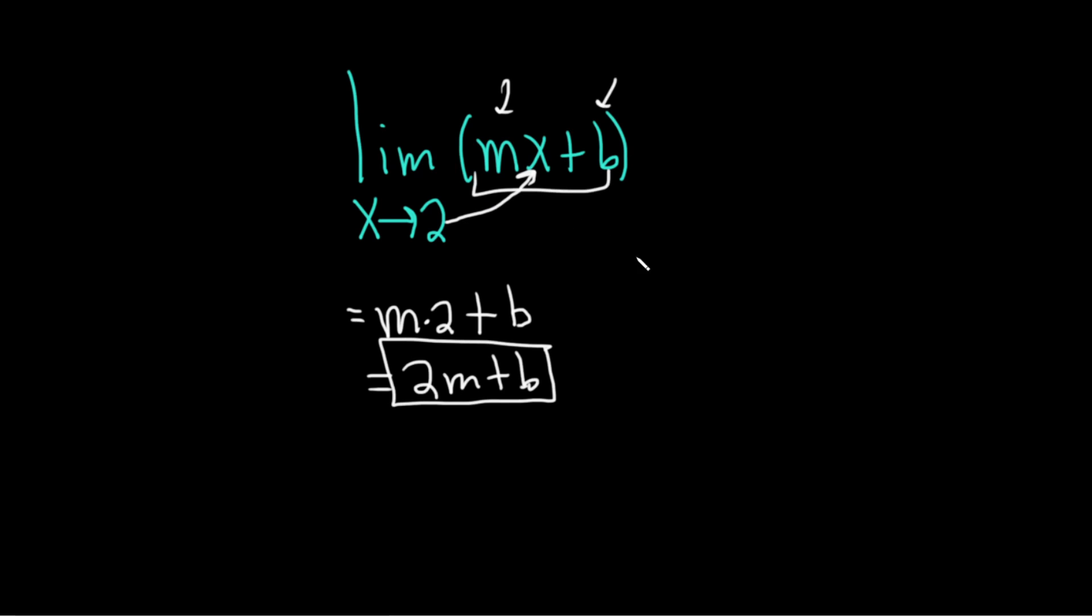It's the slope-intercept form of a line, right? m is the slope, b is the y-intercept.